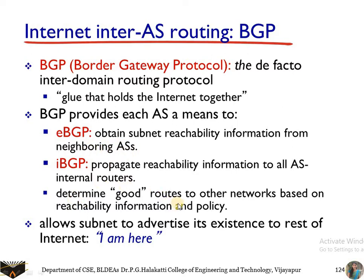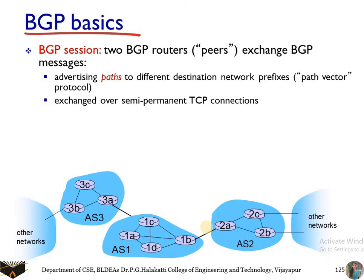BGP determines good routes to other networks based on reachability information and policy. It determines the shortest path and works based on policy measures. It also allows a subnet to advertise its existence to the rest of the internet — an 'I am here' message is exchanged between autonomous systems.